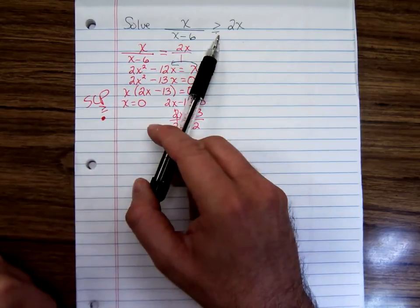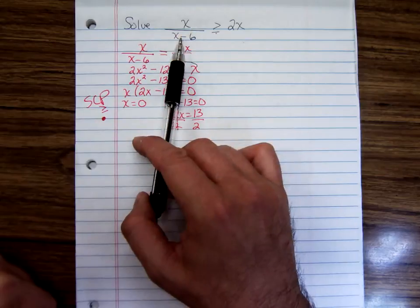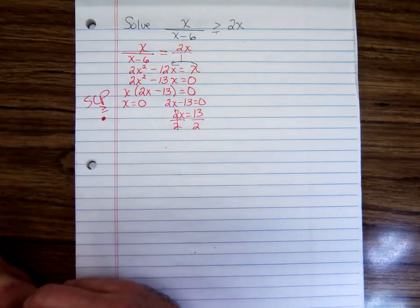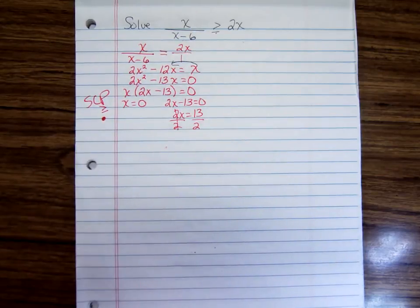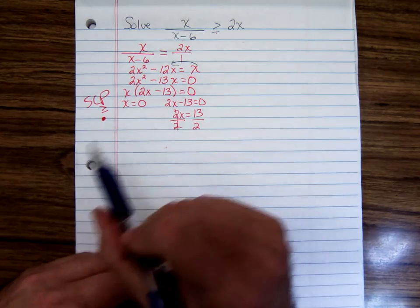If there hadn't been an equal sign there, 0 greater than 0, that would be a false statement. So that's the solution cut point.